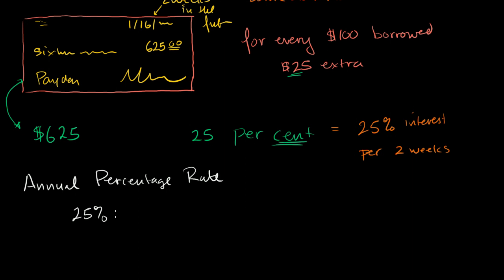So instead of multiplying it by 52 weeks, we're going to multiply it by, there's 26 two-week periods in the year. So times 26 two-week periods per year. And this is 25% per two weeks. And when you multiply this out, this is equal to, let's get the calculator out.